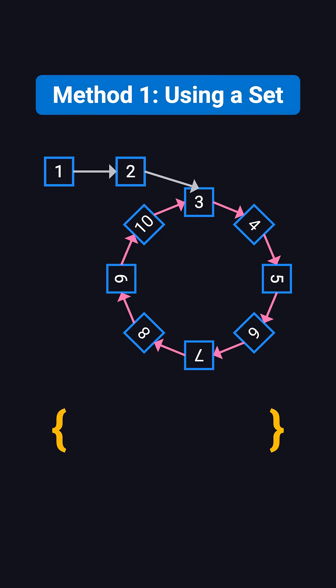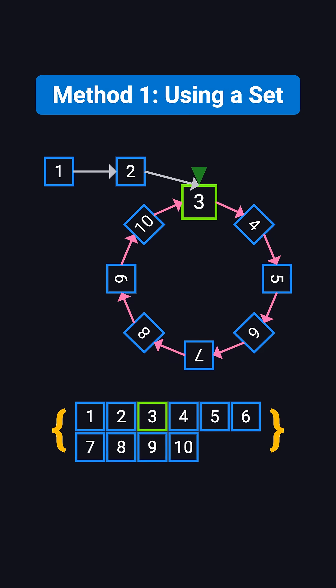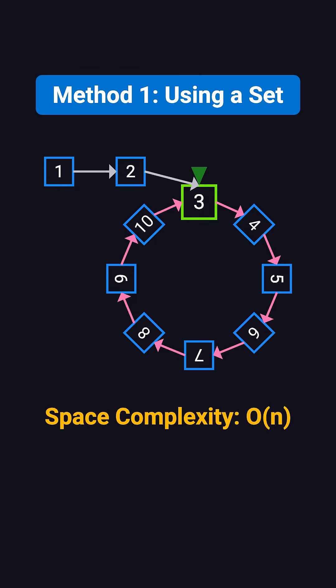A lot of people's first idea is to use a set to keep track of the nodes we visited. As you walk through the list, you store each node in the set. If you ever see a node that's already in the set, that's the start of the cycle. This works, but it needs extra O(n) space.